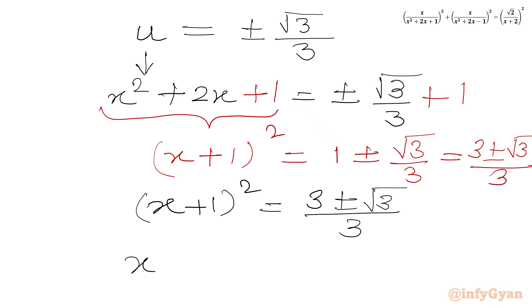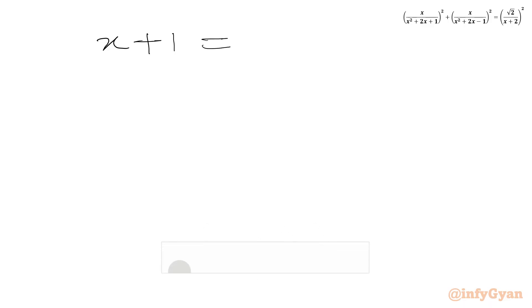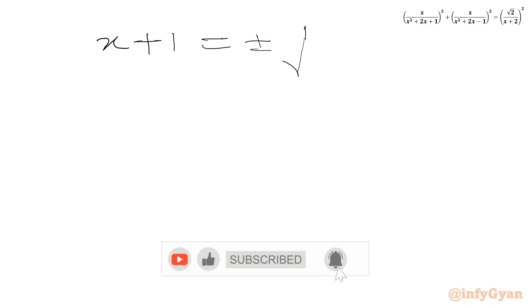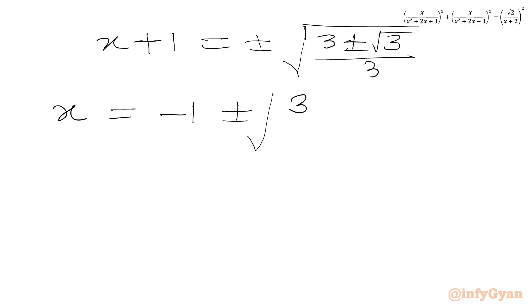Now we take the square root of both sides. We write x + 1 = ±√[(3 ± √3)/3]. To find x we subtract 1 from both sides.